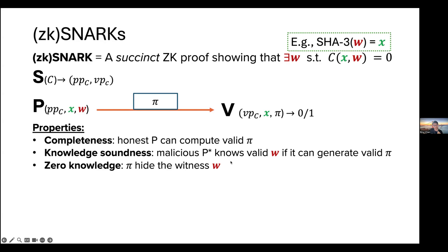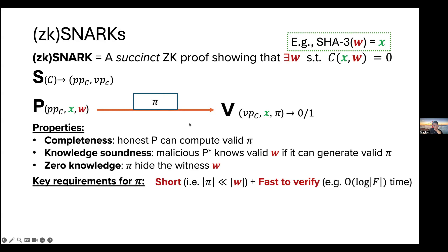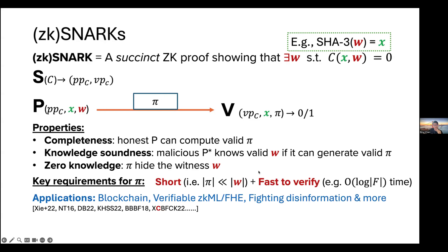You also need to satisfy several properties. First, completeness: an honest prover who knows some secret witness for a public input should be able to generate a correct proof that passes verification. Second, knowledge soundness: if a malicious prover can pass verification, then there exists an extractor algorithm that can extract a witness from black-box access to that malicious prover. Sometimes we also need zero knowledge, meaning the proof should not reveal information about the secret witness.